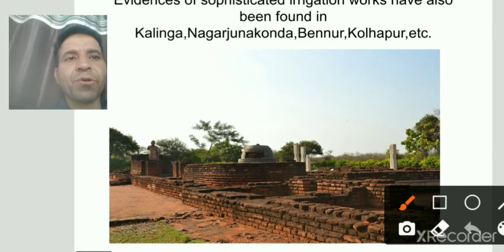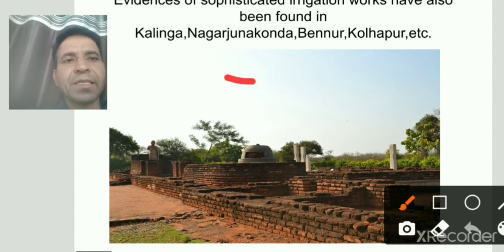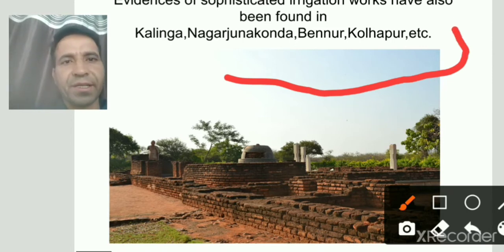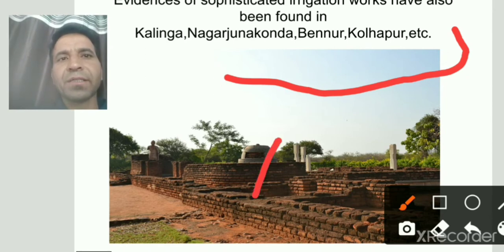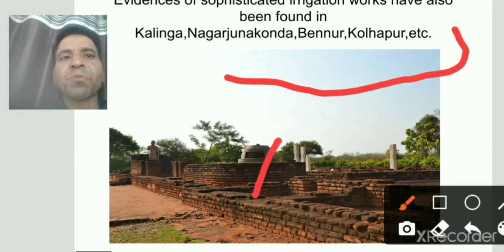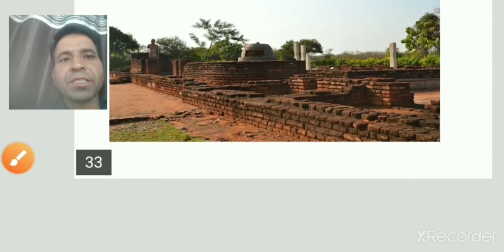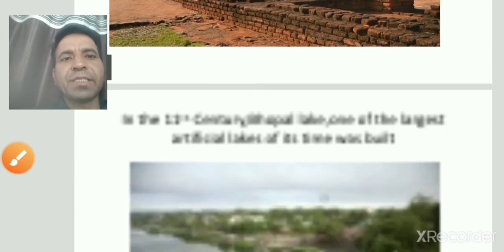Irrigation works were also found in Kalinga, Nagarjuna Konda, Benur, Kolhapur, etc. Kolhapur was located in Maharashtra. These were the sophisticated irrigation systems of ancient India — यह हमारी प्राचीन भारत के अंदर sophisticated irrigation works थे। We will see one more example in the next slides.